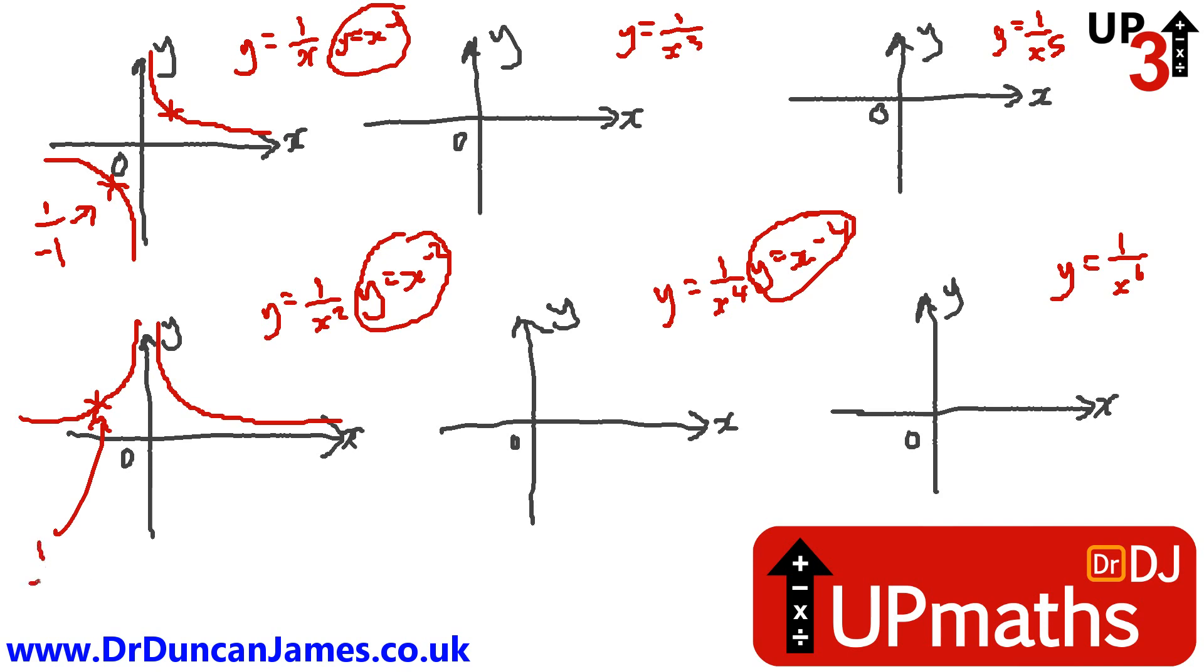Because, for example, if we consider that x equals minus 1, you'd get 1 over minus 1 squared. Minus 1 squared is plus 1. Oh, so it's positive.